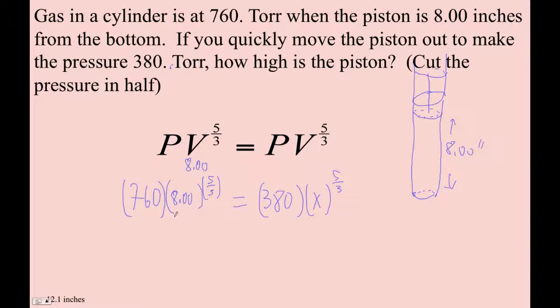So let's go 760 times 8 raised to the parentheses 5 divided by 3, divided by 380. And I get 64 is x to the 5 thirds. Now, to get what x is, I'm going to raise both sides to the 3 fifths.